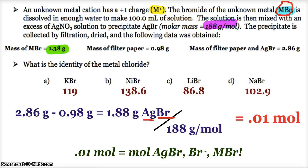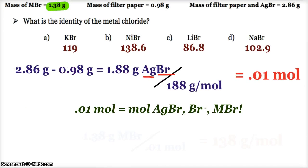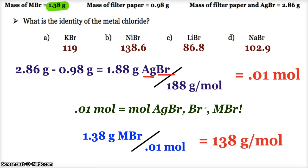metal bromide I have. We also know grams. Molar mass is grams per mole. So if I simply take the 1.38 grams, divide it by the 0.01 moles, that tells me that my metal bromide is 138 grams per mole, which is very, very similar to the nickel bromide, which is why I'm going to choose that answer.